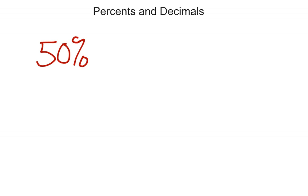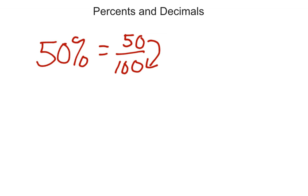Really quickly — if I have something like 50% and I want to change that to a decimal, I want to show you a couple of things. What we've been talking about is that a percent is a number out of 100. So if I change 50% into a number out of 100, I would make that 50 over 100. And then changing fractions into decimals is just top number divided by bottom number — 50 divided by 100 gives you 0.5, or even 0.50.